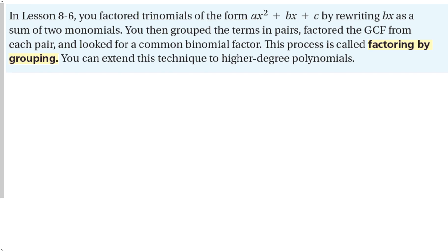So in 8-6, we factor trinomials of the form ax squared plus bx plus c. How do we do that? We rewrote the middle term as the sum of two monomials. Then we grouped the terms in pairs,